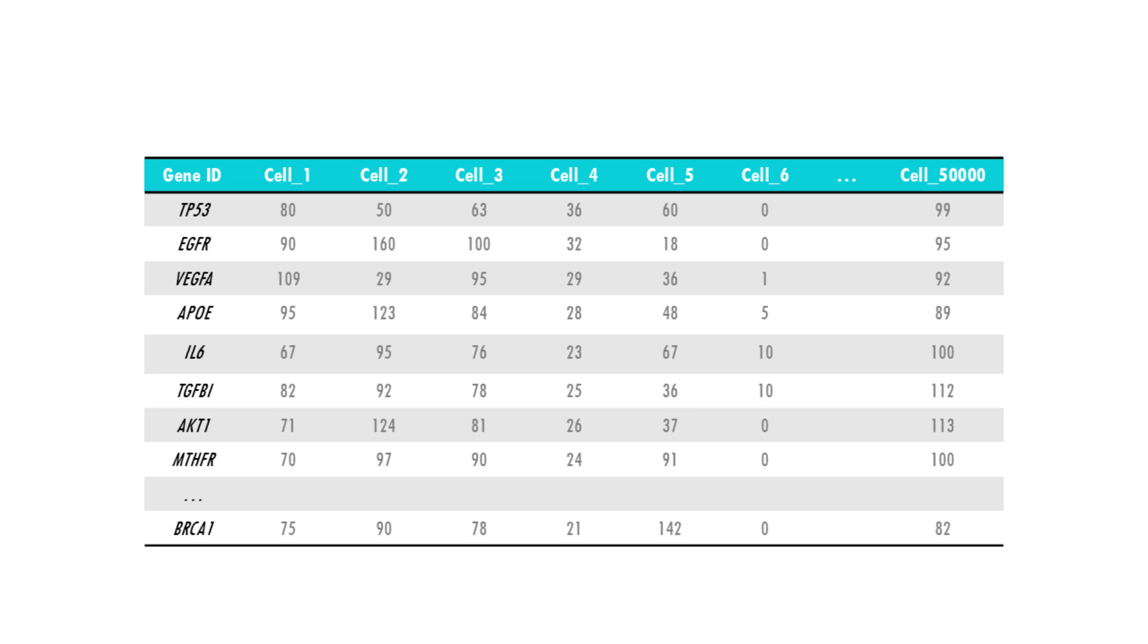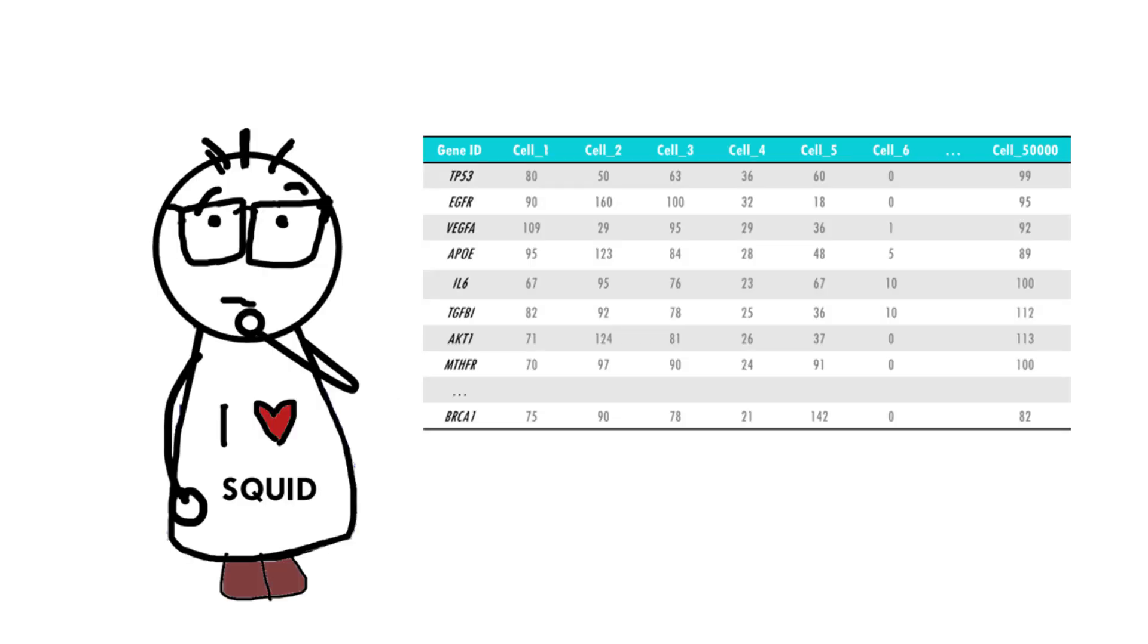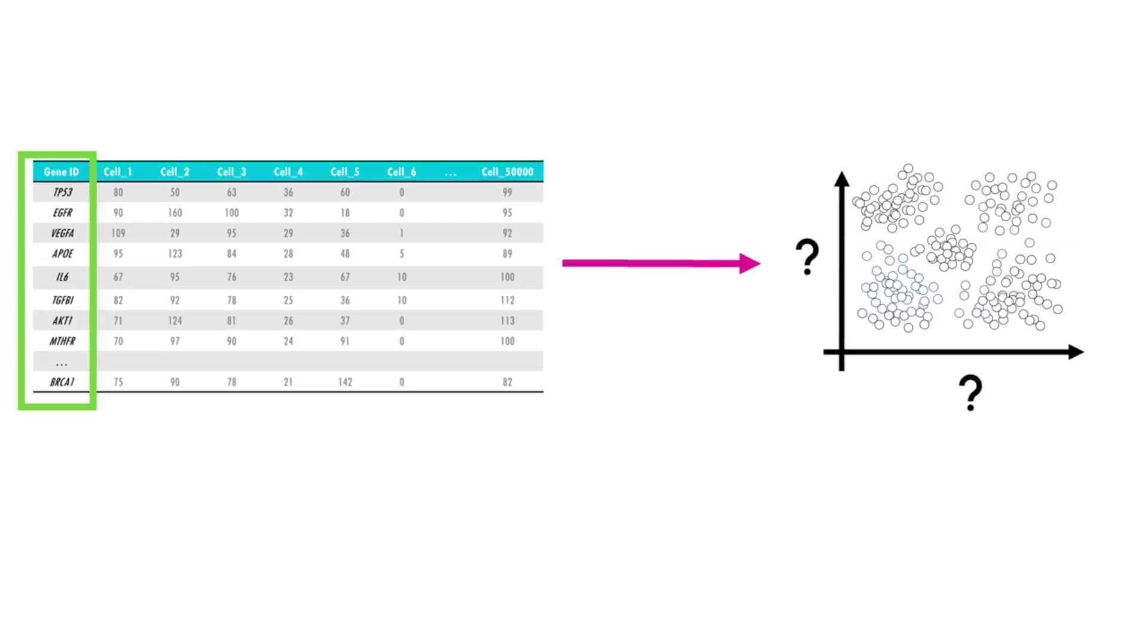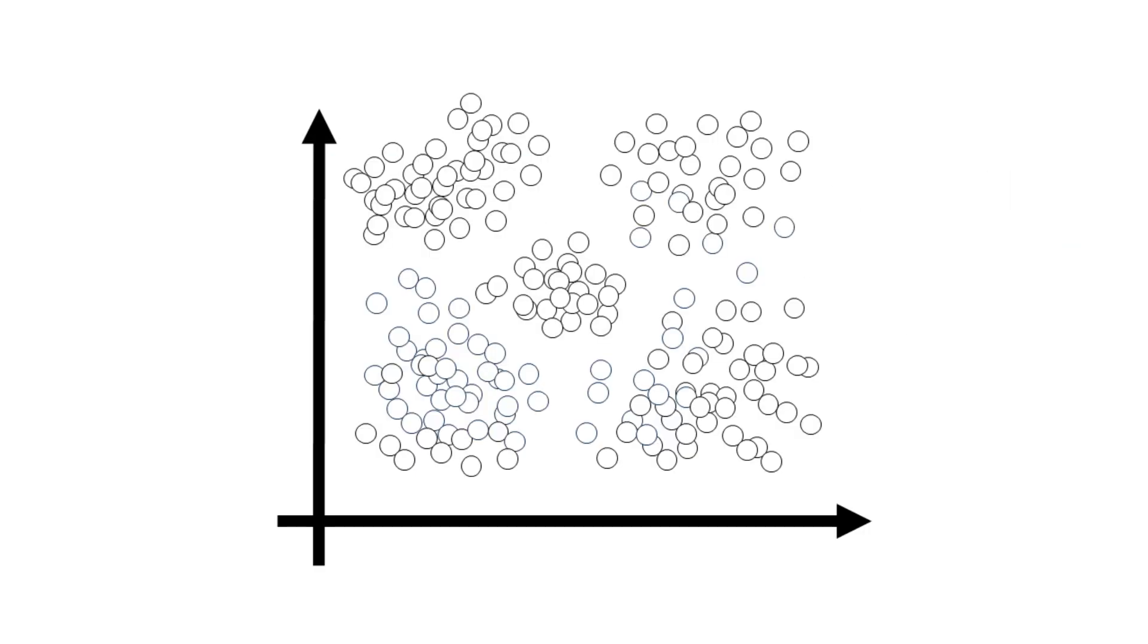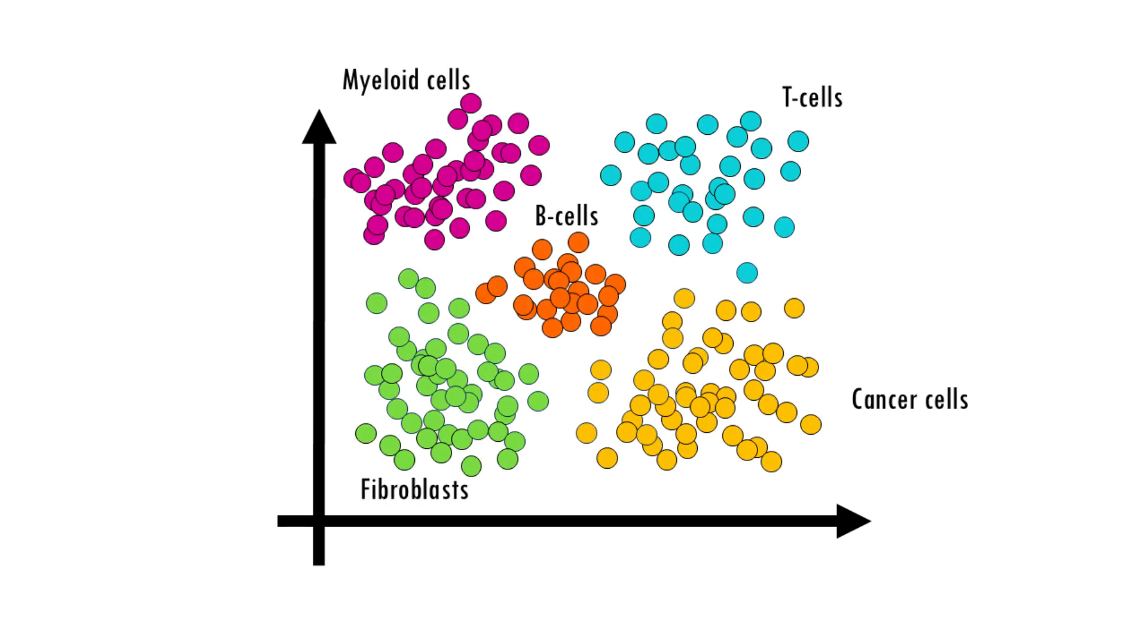Before we dive into UMAP, let's go over a few key concepts. We'll be working with an example dataset, a single cell dataset with a gene expression of 10,000 genes across 50,000 cells. Sometimes we want to visualize big datasets like this one in a plot, for example to identify clusters of cells that group together because they have a similar gene expression profile. In other words, cells from the same cell type or cell identity.